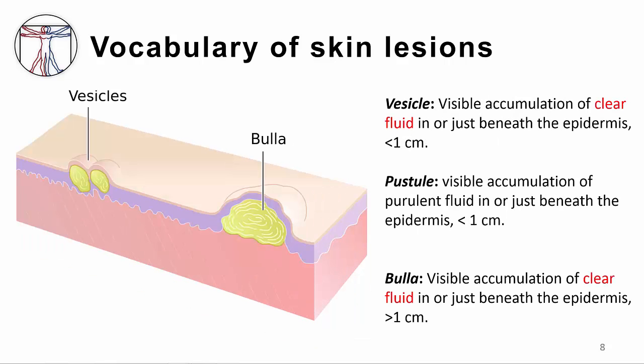Finally, a vesicle is an accumulation of clear fluid in or just beneath the epidermis and is less than one centimeter. A pustule is very similar in size and location, but has purulent fluid, and a bulla has clear fluid but is larger than a centimeter.